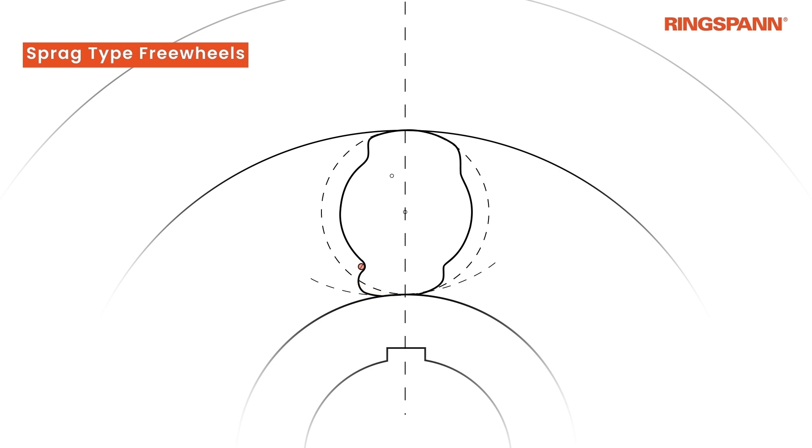A spring forces the Sprague into contact to ensure an immediate engagement at any time. When the freewheel engages, the forces Fi and Fa appear on the line of influence, connecting the points of contact.